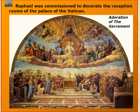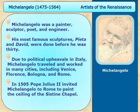Beautiful murals. Michelangelo was a painter, sculptor, poet, and engineer. His most famous sculptures — the Pietà and David — were done before he was 30. Due to political upheavals in Italy, Michelangelo traveled and worked in many cities, including Venice, Florence, Bologna, and Rome.